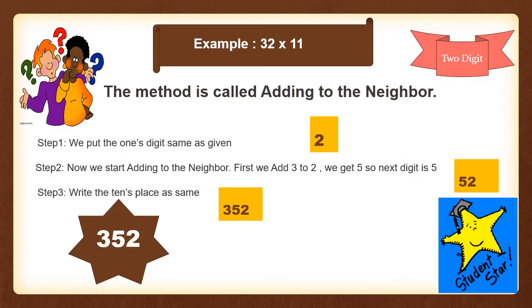First, let us see how this trick works in case of multiplying a 2-digit number by 11. If we have to find the product of 32 and 11, we will follow this Vedic Maths technique. This method can easily be remembered as 'adding to the neighbor.' It is very important to start from the right-hand side, so we start from the 1s place. In step 1, we copy the 1s place as given, so we write 2.